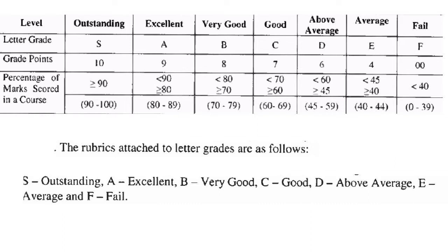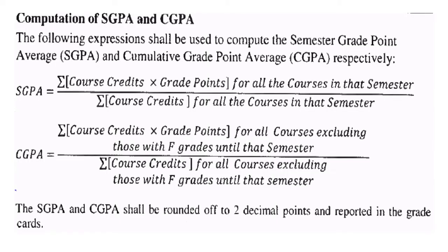We already discussed the computation of SGPA and CGPA in previous videos. SGPA is the sum of the product of course credits and grade points for all courses in that semester, divided by the summation of course credits for all courses in that semester. CGPA is the cumulative grade point average — the sum of course credits multiplied by grade points for all courses, excluding those with F grades, until that semester.